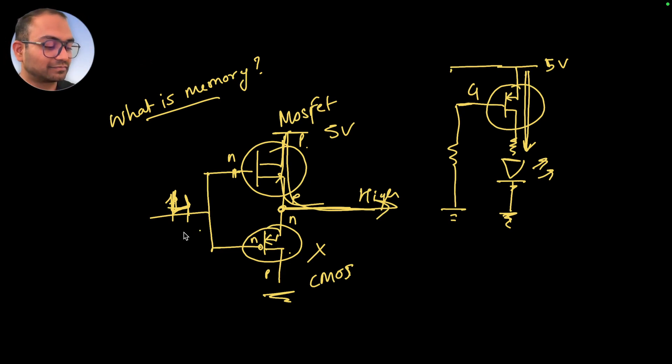Once we connect them in this fashion, if there was a high voltage here, this line gets connected to five volts - we call this a logic high. When this is high, this won't conduct. When this is low, this one is conducting and takes the line and connects it to ground. This is how zeros and ones are being communicated using transistors.